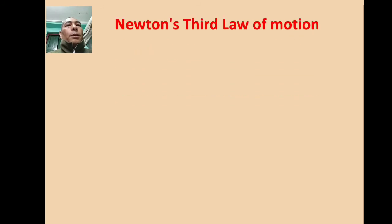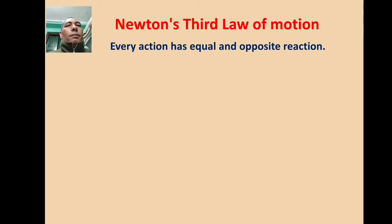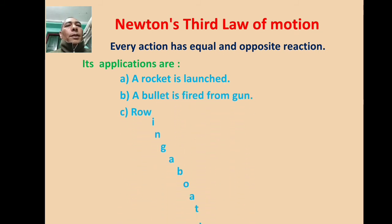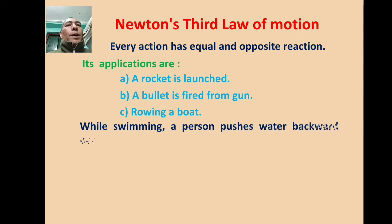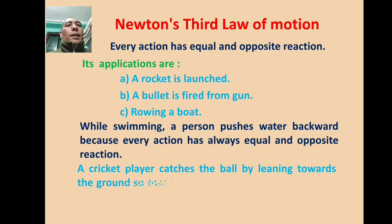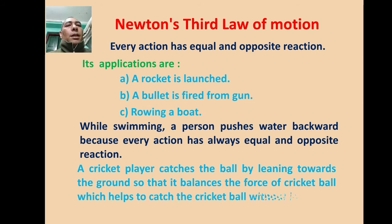Newton's Third Law of Motion: Every action has an equal and opposite reaction. Applications: A. A rocket is launched. B. A bullet is fired from a gun. C. Rowing a boat. While swimming, a person pushes water backward, and because every action has an equal and opposite reaction, they move forward. A cricket player catches the ball by leaning towards the ground to balance the force of the cricket ball, which helps catch it without injury.